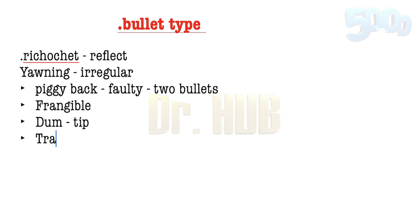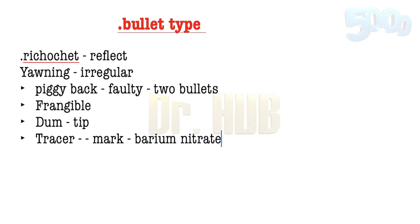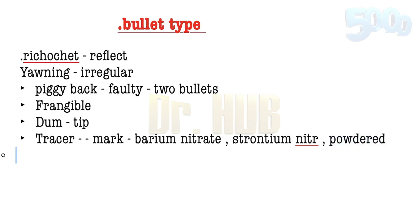Next is the tracer bullet. This type of bullet leaves a visible mark or trace during flight. The rear portion of the bullet is filled with a mixture of barium nitrate, strontium nitrate, and powdered magnesium. These components are very important to remember.